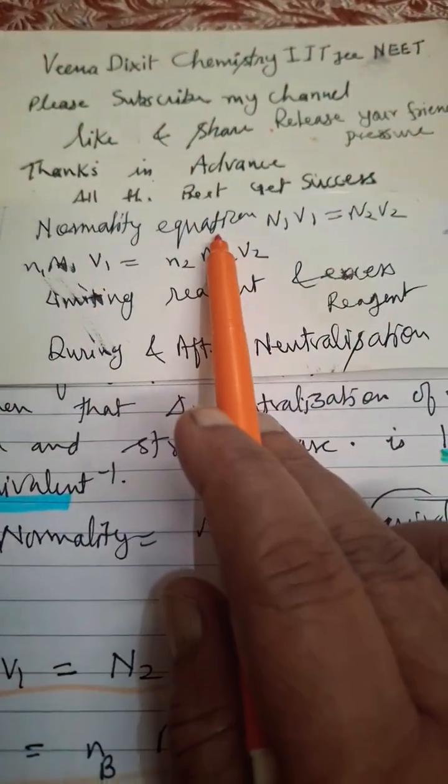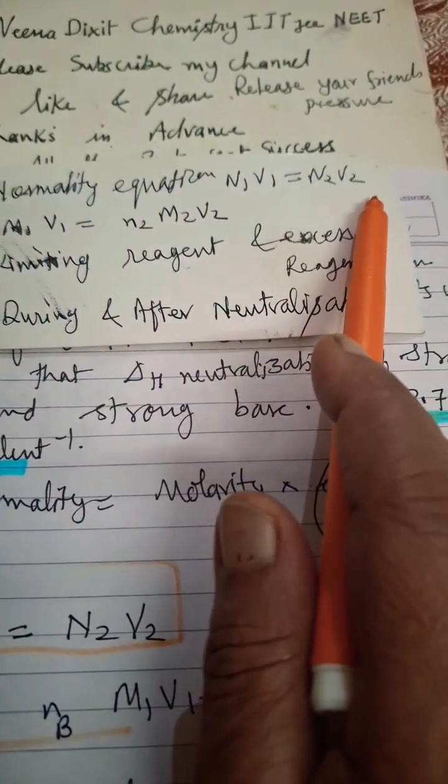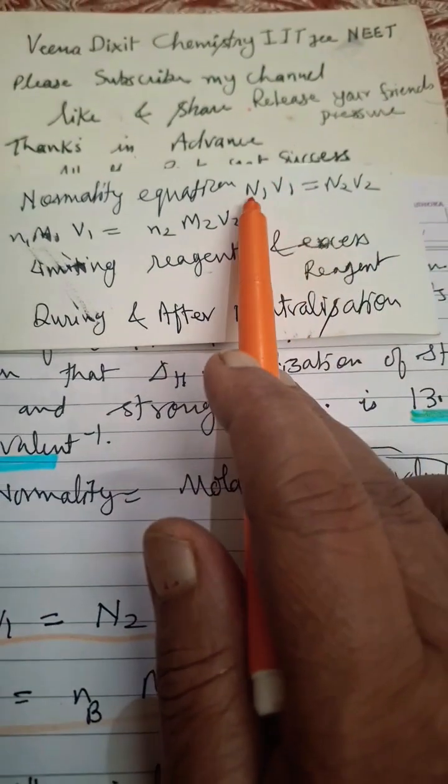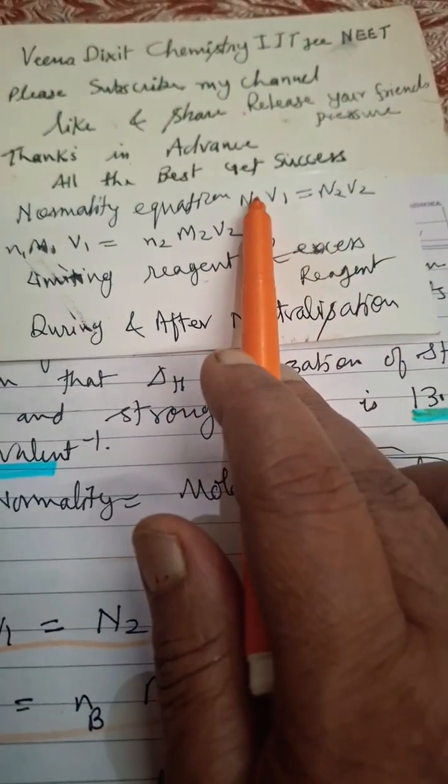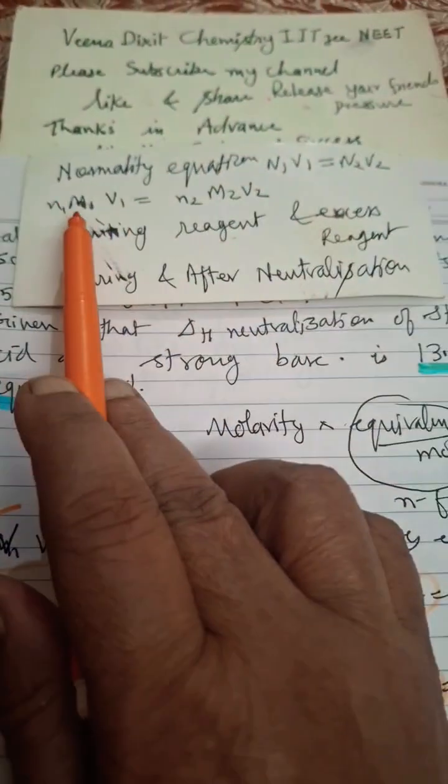Hello students, here we discuss normality equation N1V1 = N2V2, where N1 is the normality and V1 is the volume. In both cases, this is for acid and this is for base.